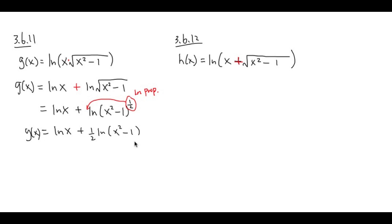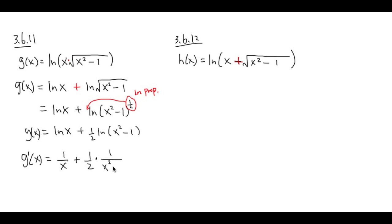This is the g of x that you want to differentiate. This way, you don't need to deal with a product — otherwise, you'd have to use the product rule. Looking at this as g of x, g prime of x: the derivative of ln x is 1 over x, plus 1/2 times — the derivative of ln of x squared minus 1 gives 1 over x squared minus 1, and then you multiply by the derivative of the inside function, which is 2x. The 2 and 2 cancel.